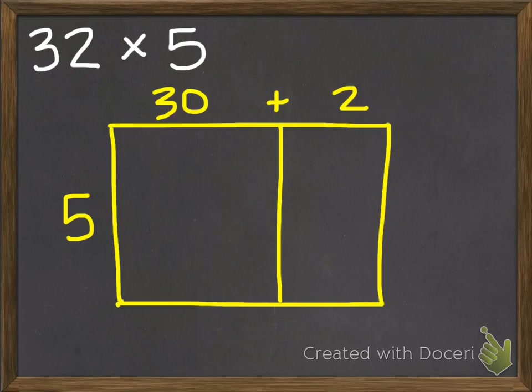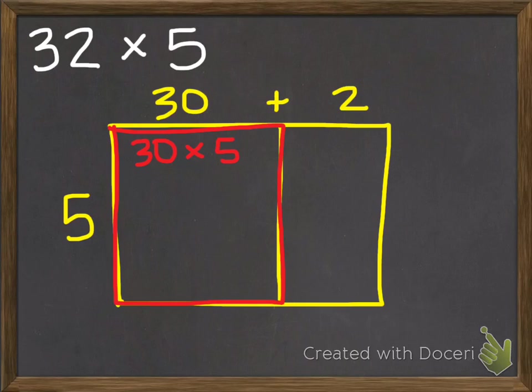I'm going to draw it into two rectangles so I can get started. On the first rectangle, this one here, it is 30 by 5. 30 times 5 is 150.